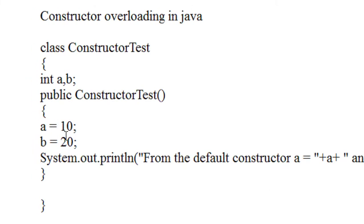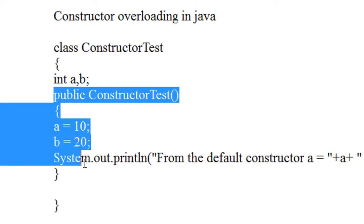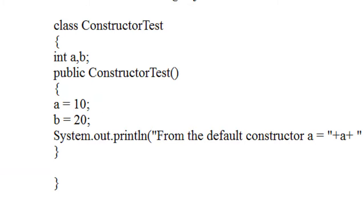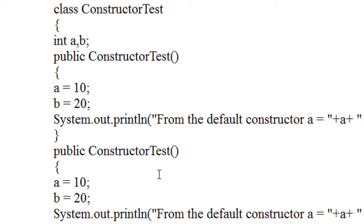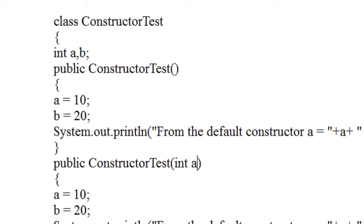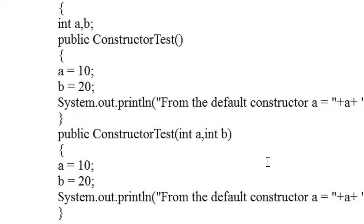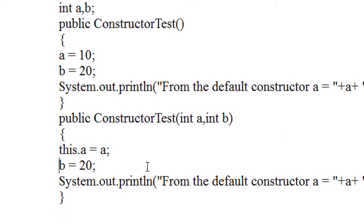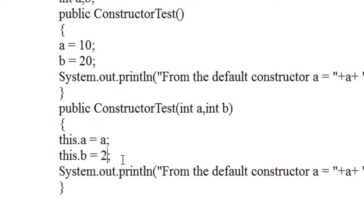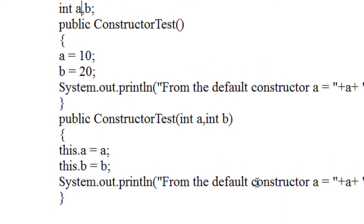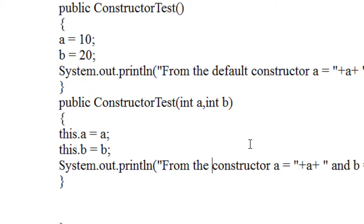In this class, the class name is ConstructorTest. There is a constructor that assigns two values for the variables a and b. Now I create another constructor for this class, but here I pass two arguments — two integers a and b — and assign them as this.a equals a and this.b equals b.